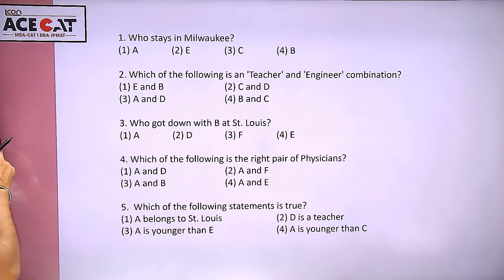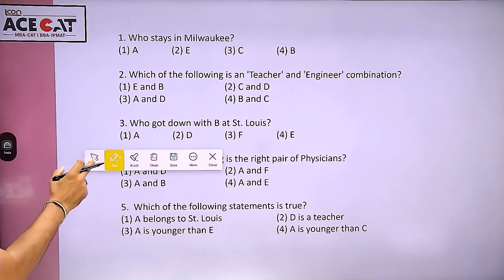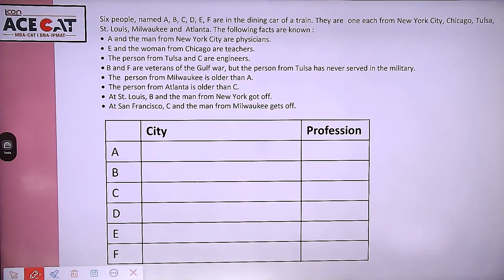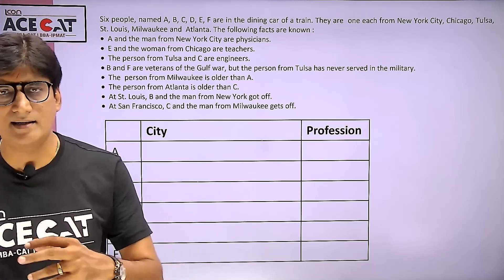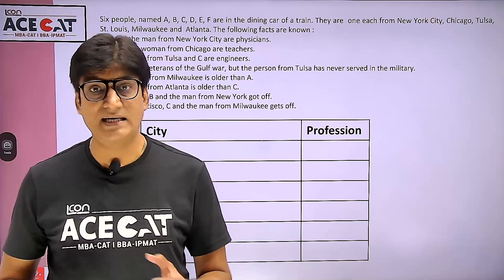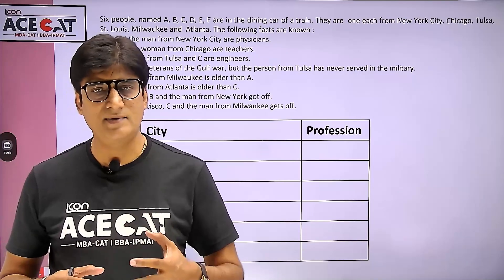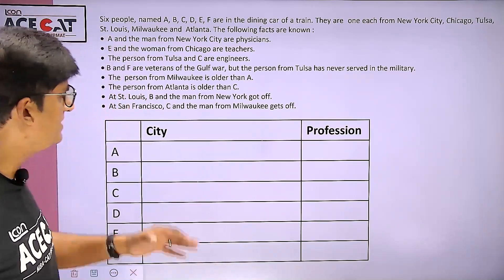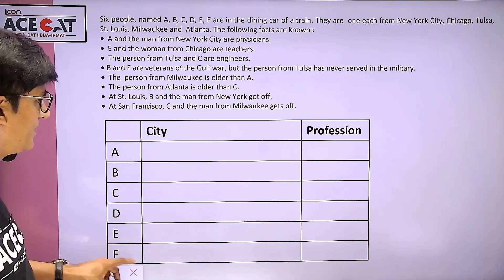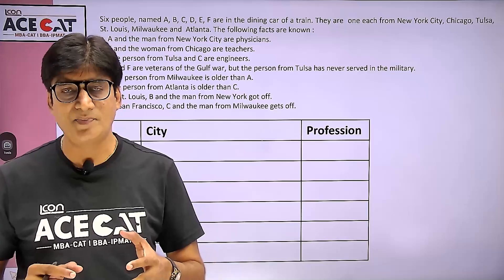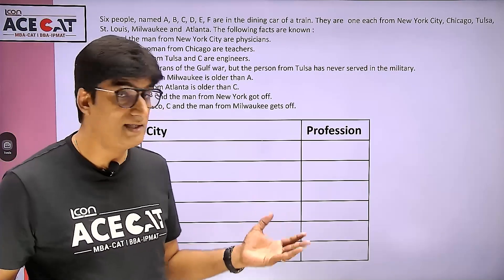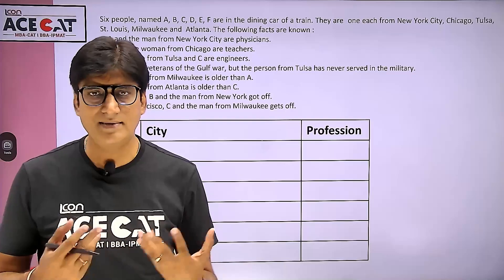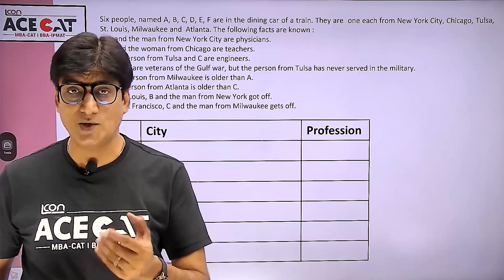Let's start solving this question. Whenever you come across a set where some conditions are given and we have to make a data arrangement, the table we build plays the most important role. How to make tables, how to make columns — students, if you have gone through this data, you will understand: there are six persons, and we have to find out which person belongs to which particular city. Six cities are given, and we also need to find out the profession. Some age-related conditions are also given. Let's start solving.